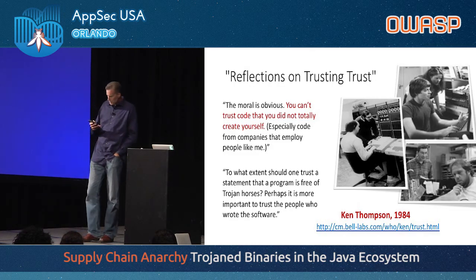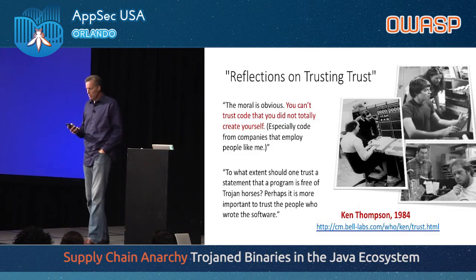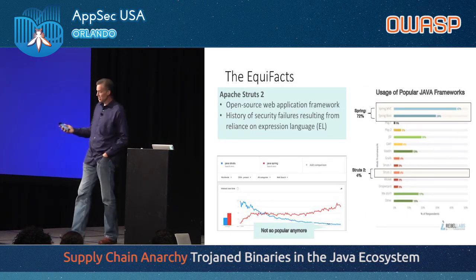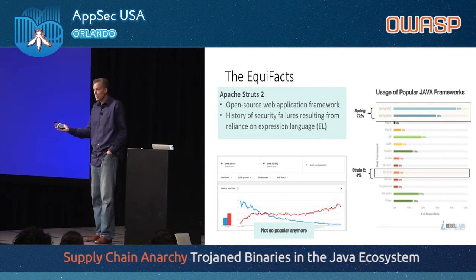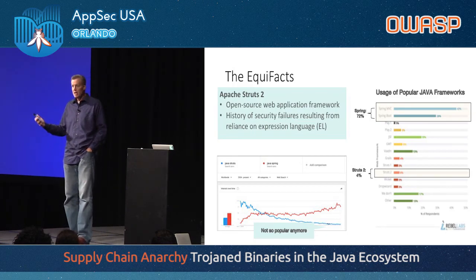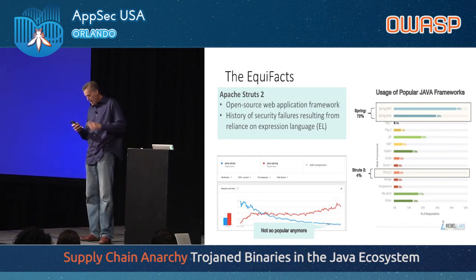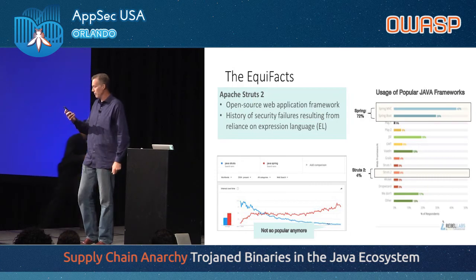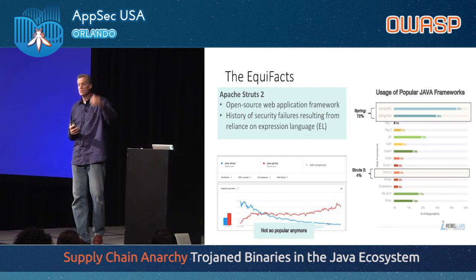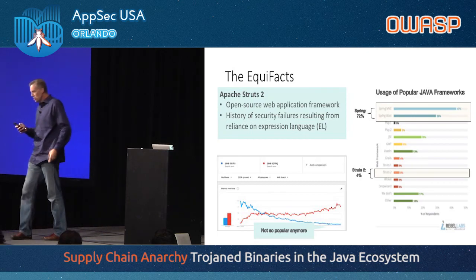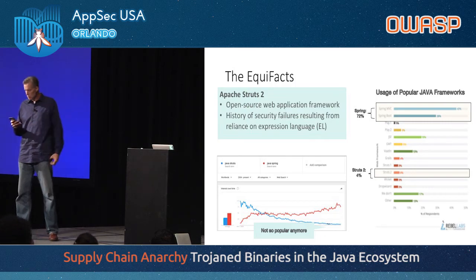I want to spend a few minutes on Equifax because we kind of have to — this is a serious supply chain problem. A little background on Struts 2: it's a framework that lets you build web applications more easily by providing all the plumbing. It's kind of in decline. Currently Spring is about 72% of web applications and Struts 2 is down to about 4%, but a few years ago it was pretty big, so there are a lot of Struts 2 applications out there.